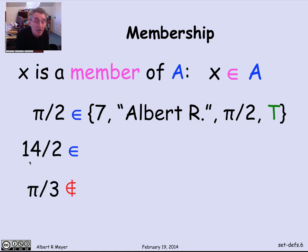14 over 2 is also a member of that set, because 14 over 2 is just another description of 7. When I write 7 here, I don't mean the character 7. I mean the number 7. And so 14 over 2 is the description of the same number. It's in that set.